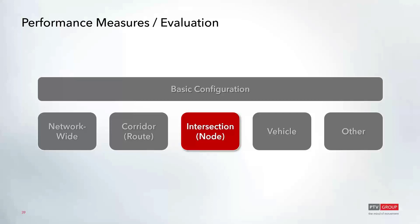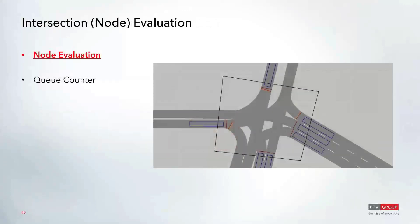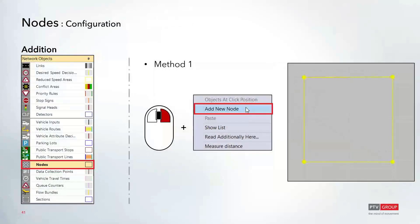Now moving on to intersection-related results. Within Vissim, intersection data is collected with two different objects: nodes or queue counters. Nodes in Vissim are area objects rather than point objects — they're polygons placed on the network around any intersection to gather intersection-specific data. To add nodes to the network, once selected from the network object toolbar, you can right-click anywhere in the network and choose 'Add New Node,' which produces a square node you can then move or configure. The second option is to press Control and right-click to place the first node point (shown in yellow), then place intermediate points by left-clicking.